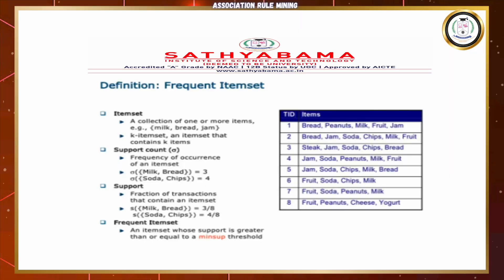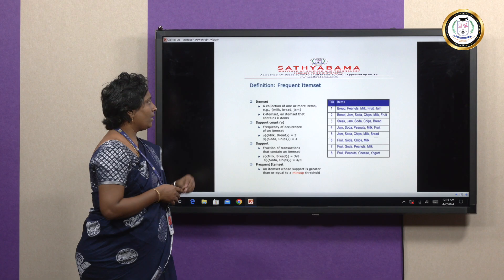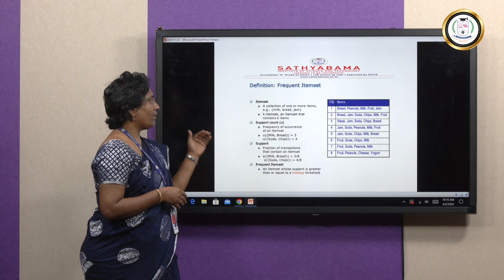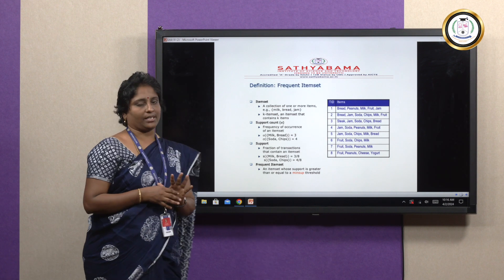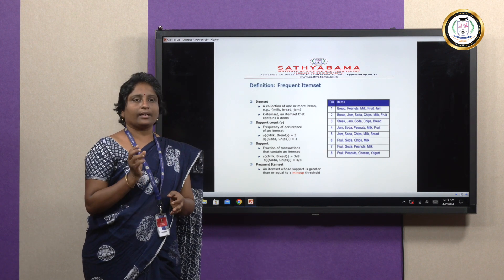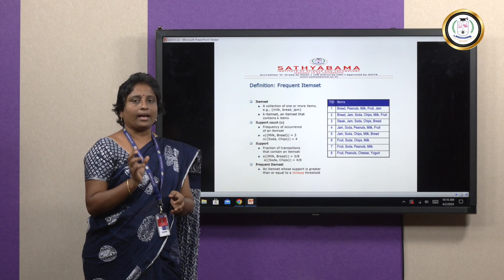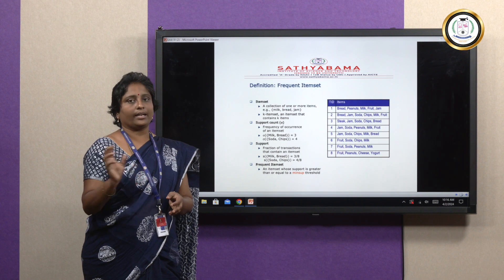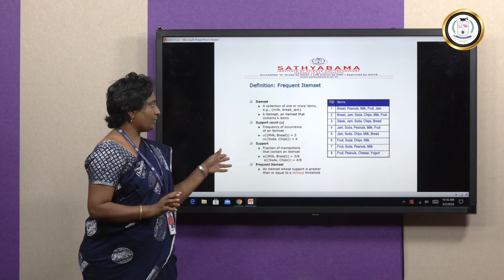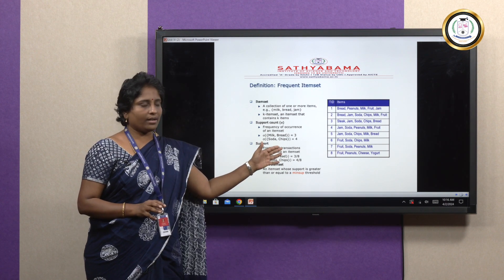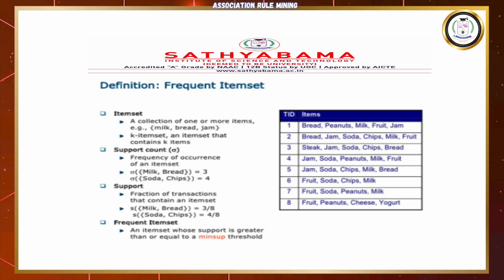Before getting into association mining, we should be clear about some key terms. First, what is an item set? An item set is nothing but the collection of individual items or objects in a database. For example, bread, peanut, milk, fruit, jam — these are called an item set.